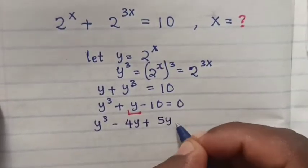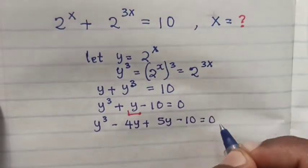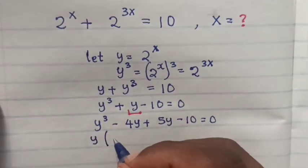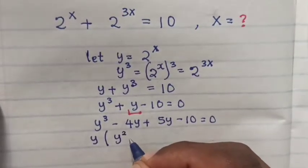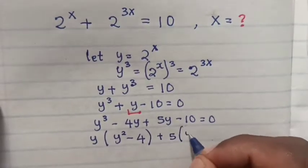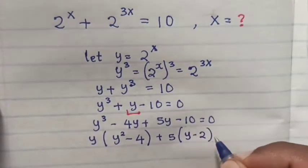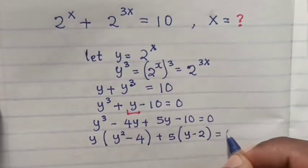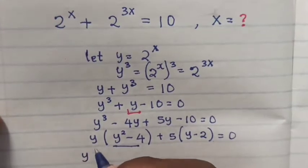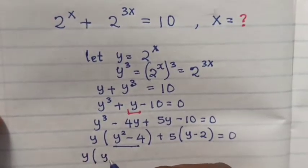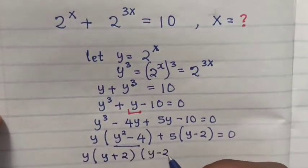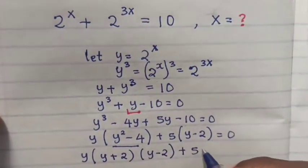So then the factors are minus 4y plus 5y. Then we take y out of the bracket and 5 out of the bracket. So inside the bracket will be y^2 minus 4 and y minus 2. y^2 minus 4 is the same as (y + 2)(y - 2).